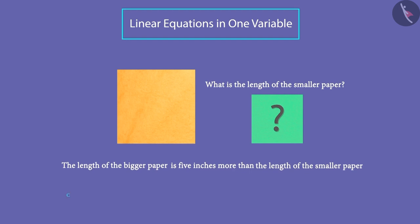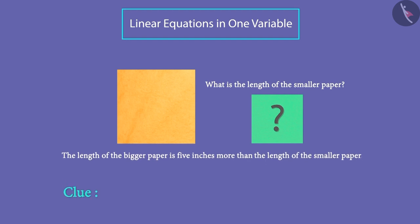The clue has been given to her. The clue is that the perimeter of the bigger paper is 4 by 3 times the perimeter of the smaller paper. Let's find out the answer.